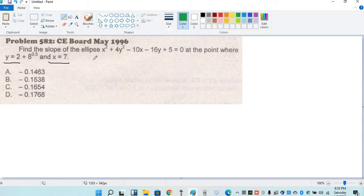So slope is equal to y prime or derivative of y with respect to x. So the equation is x squared plus 4y squared minus 10x minus 16y plus 5 is equal to 0.